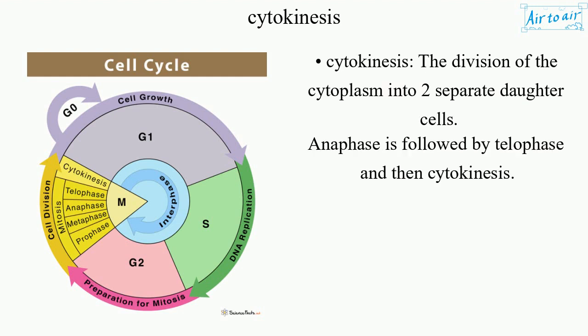Cytokinesis is the division of the cytoplasm into two separate daughter cells. Anaphase is followed by telophase and then cytokinesis.